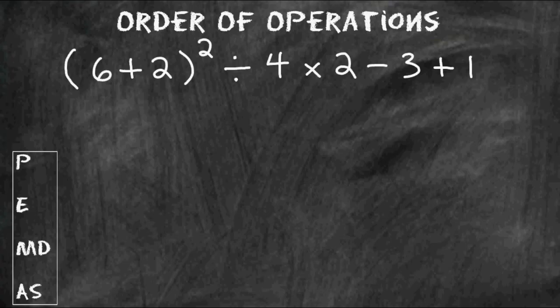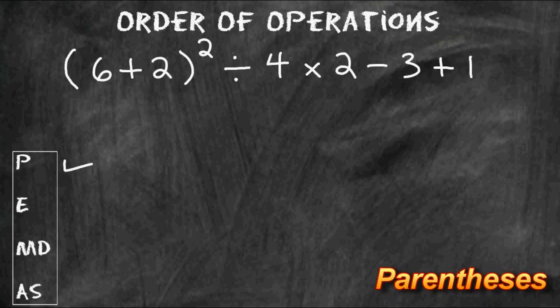The first thing that we have to do with the order of operations is to solve everything located inside any set of parentheses first. In this example, we have 6 plus 2 inside parentheses, which is 8.